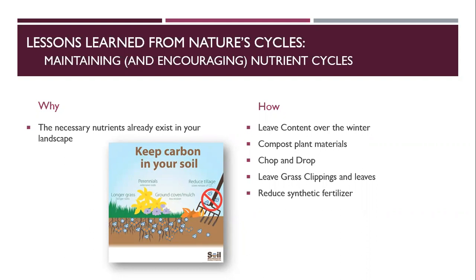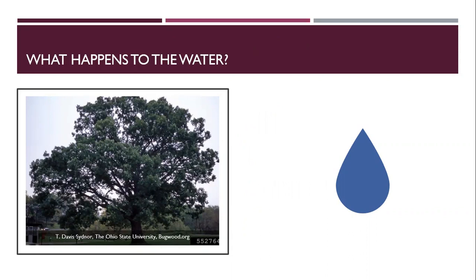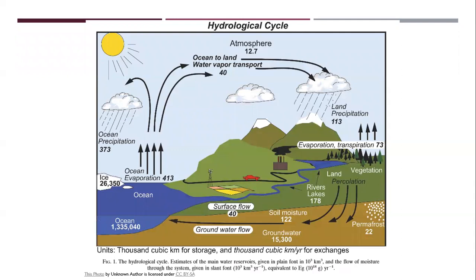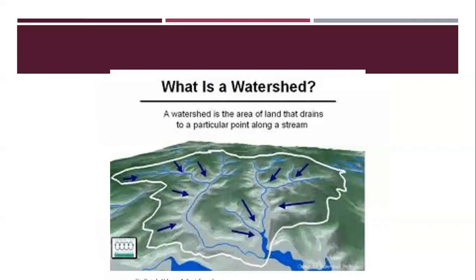What happens to the water? There's also a really important cycle in our ecosystems. Water vapor in the atmosphere forms clouds that cause precipitation on our landscape — snow or rain. That precipitation can either run directly on the surface into the closest waterway, or it can infiltrate into the soil as soil moisture or groundwater, absorbed by plants and eventually evaporating and transpiring back into the atmosphere, restarting the cycle.